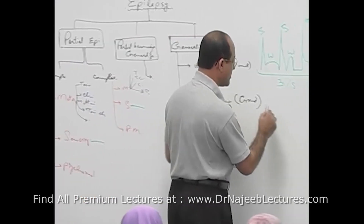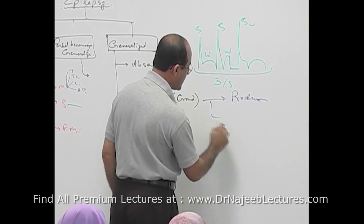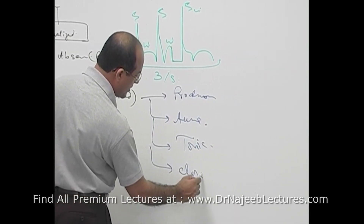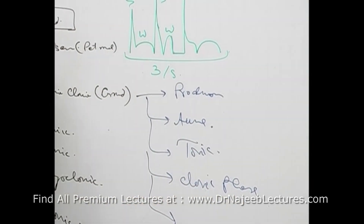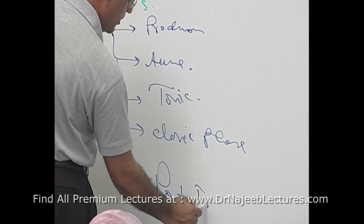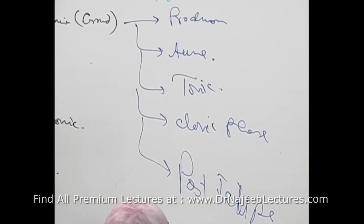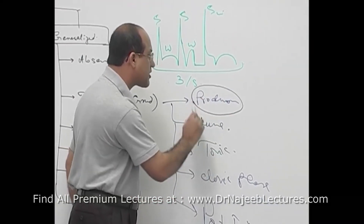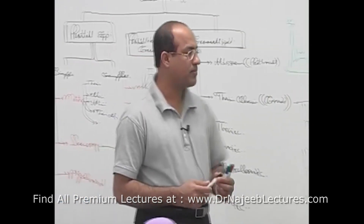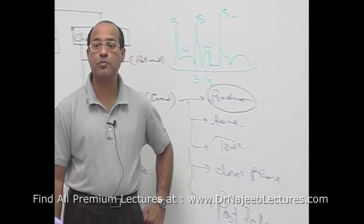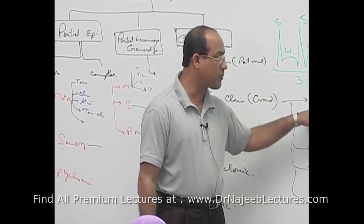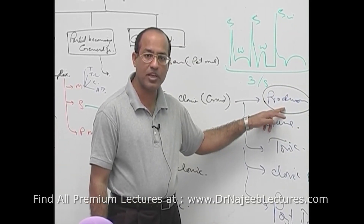Tonic-clonic seizure has different phases. Some cases have a prodrome, then there is aura, then tonic phase, followed by clonic phase, and then postictal phase. Prodrome occurs before the seizure — it is not part of the seizure itself. During prodrome, the patient may develop some behavioral, mood, or motor abnormality which other people can also observe.